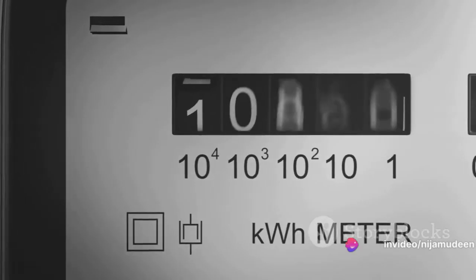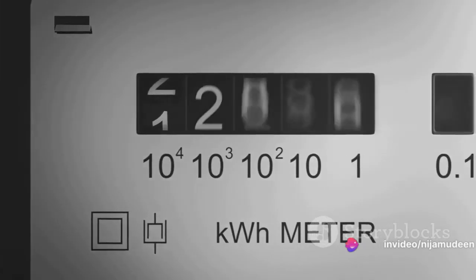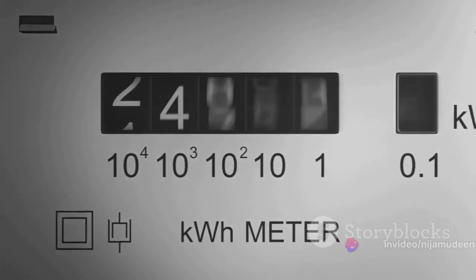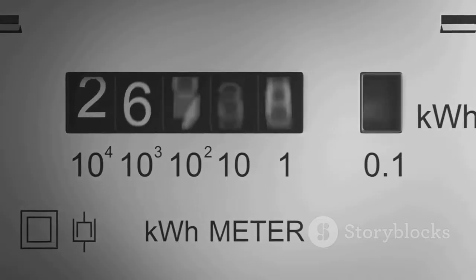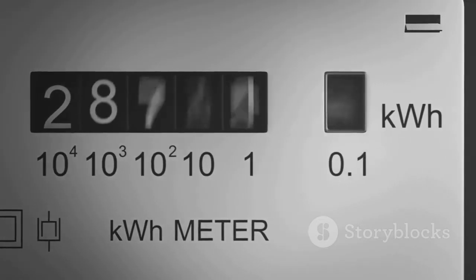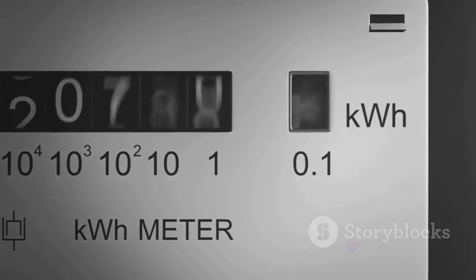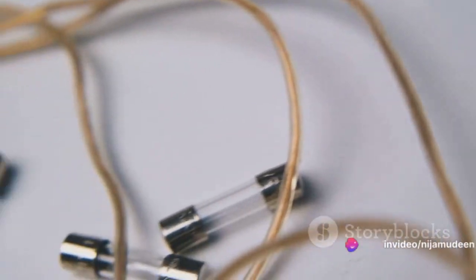Here's how it works. A small current is passed through the RTD and the resulting voltage is measured. With the help of Ohm's law, which states that voltage equals current times resistance, we can calculate the resistance of the RTD.